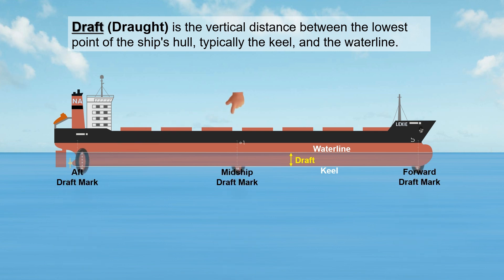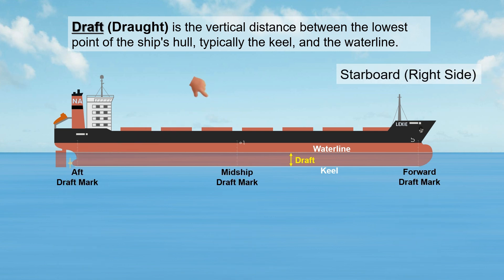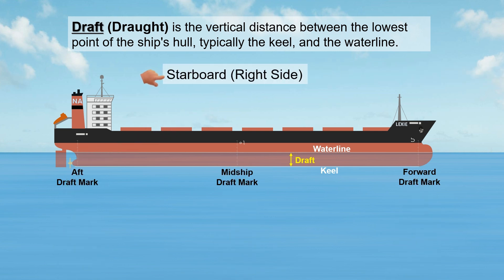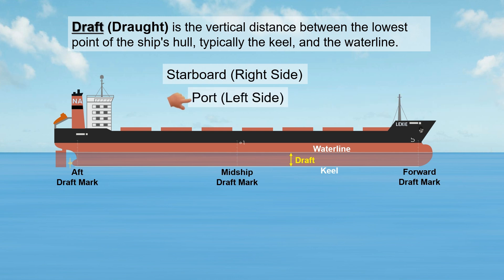Draft marks are located on both sides of the vessel — on the starboard (or right side) and on the port (or left side). Each mark denotes the distance from the bottom of the keel to the waterline.